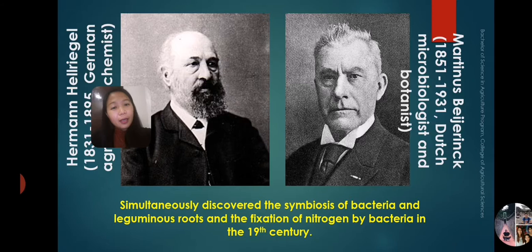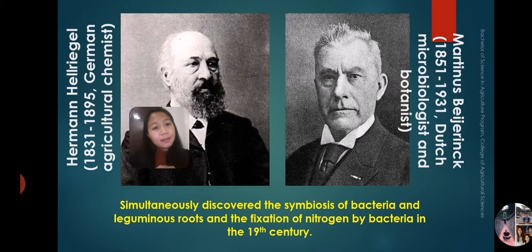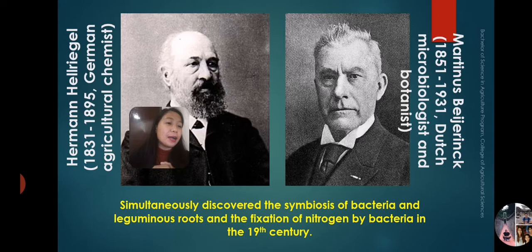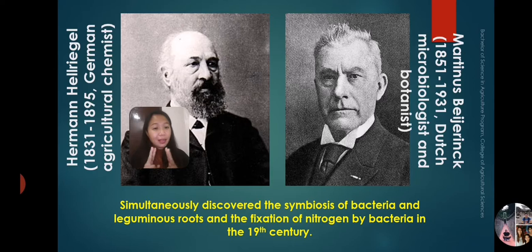Hermann Hellriegel, a German agricultural chemist who existed from 1831 to 1895, and Martinus Beijerinck, a Dutch microbiologist and botanist who existed from 1851 to 1931, both simultaneously discovered the symbiosis between bacteria and leguminous roots and the fixation of nitrogen by bacteria in the 19th century.